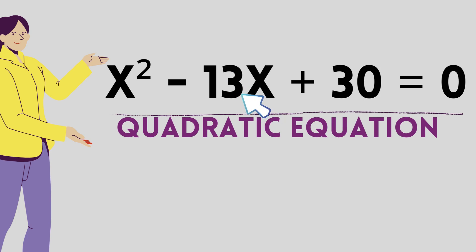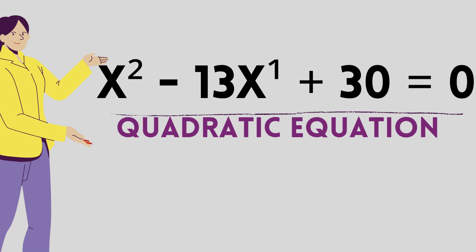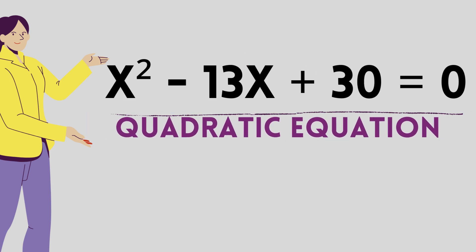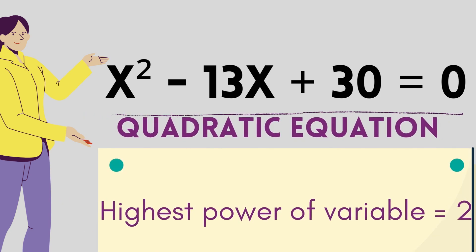And in the second term, the term is minus 13x and the power of x is 1. And there is no other term containing the variable x. So we conclude that the highest power of x in this equation is 2. And such equations having the highest power as 2 are termed as quadratic equations.